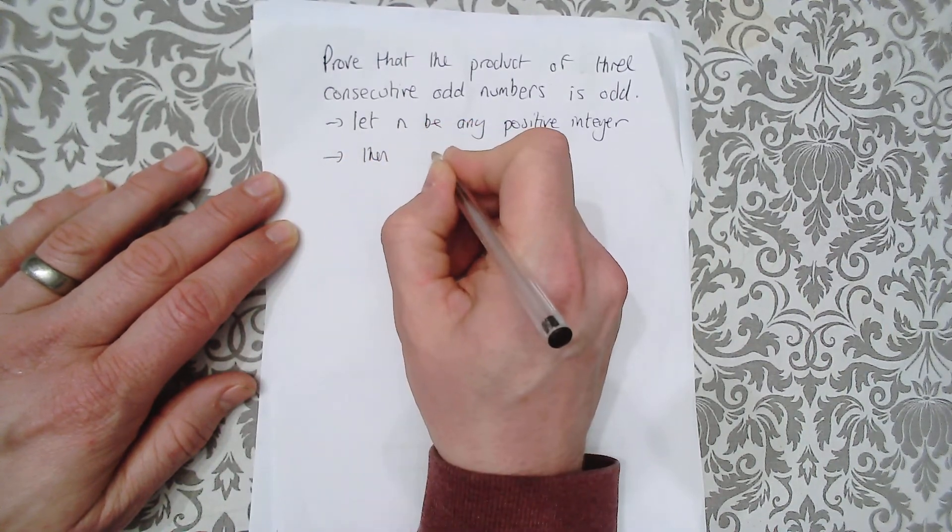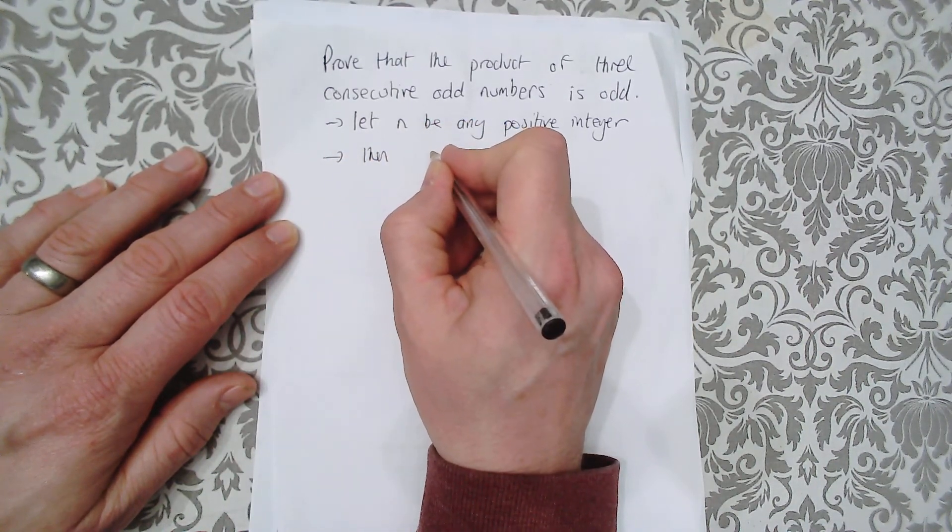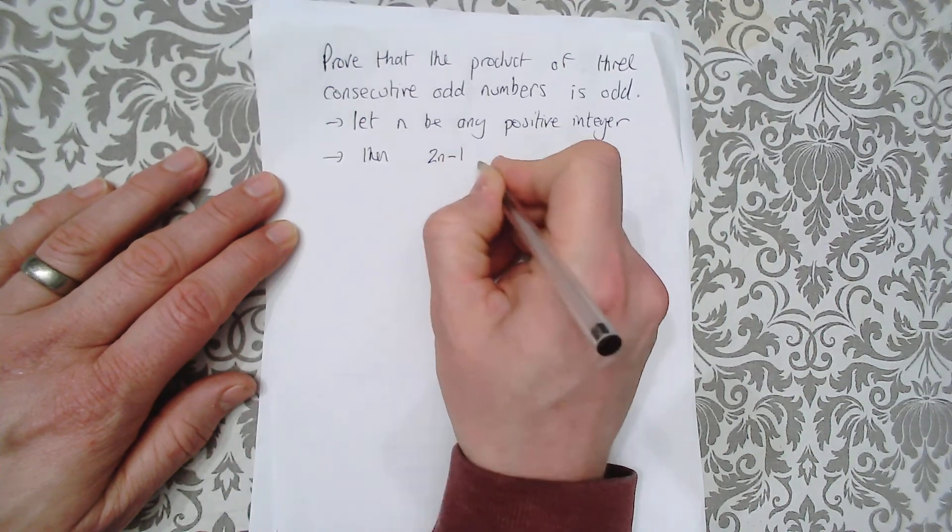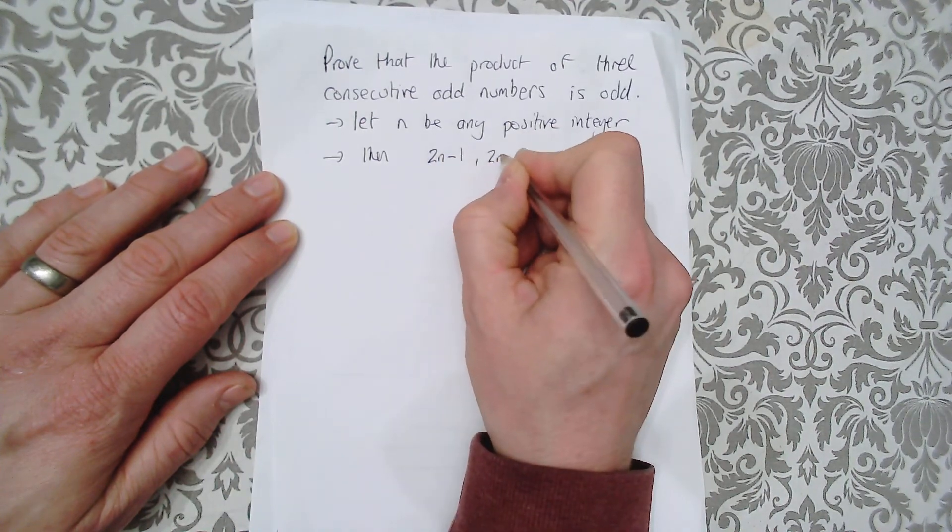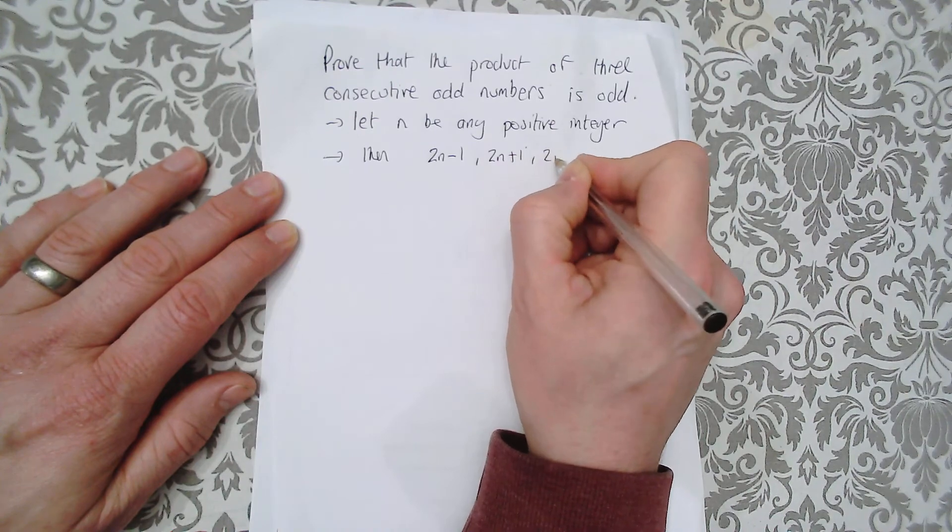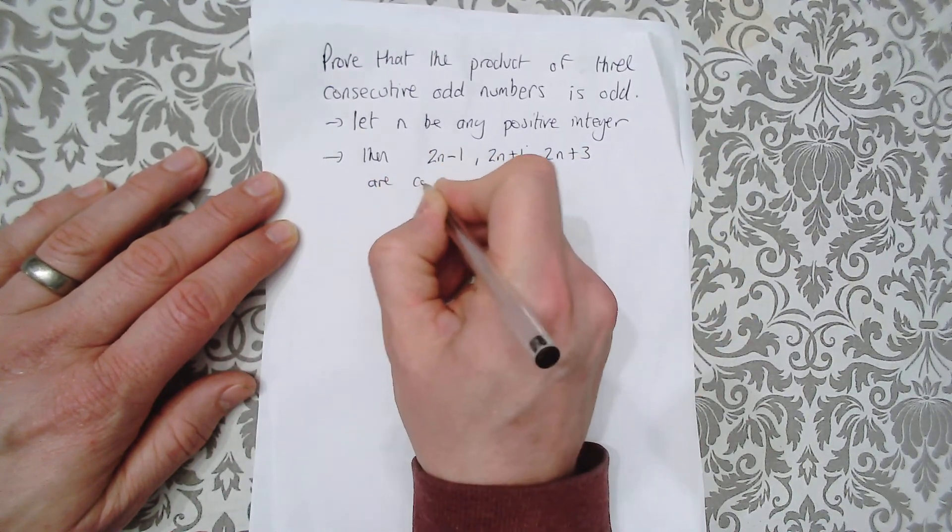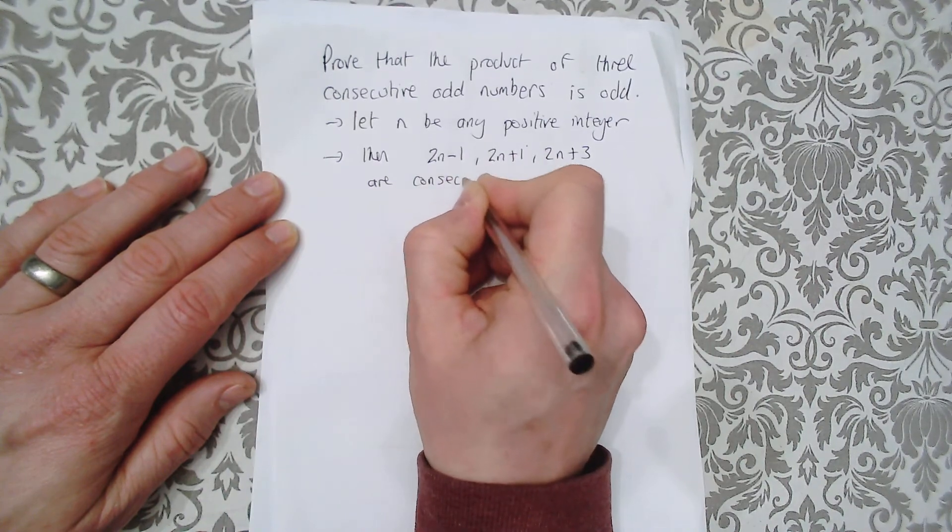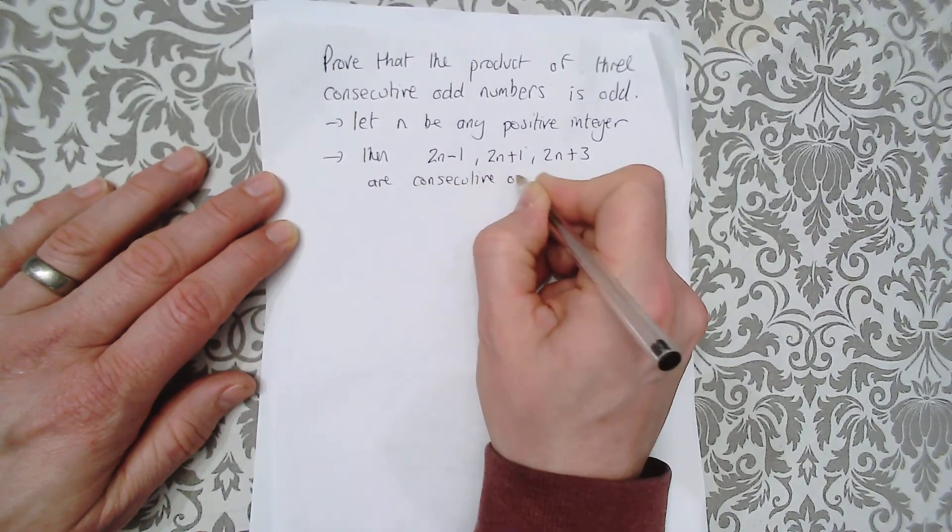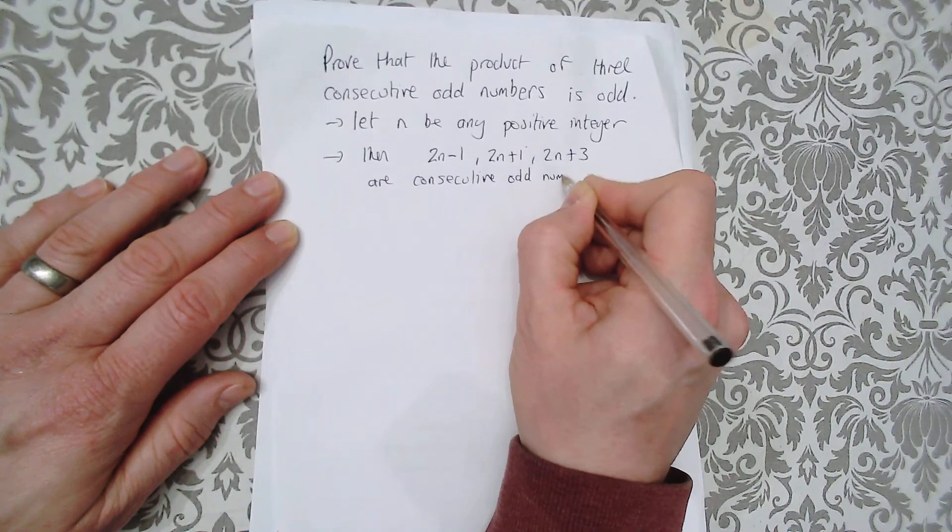Then we could say 2n minus 1, 2n plus 1, and 2n plus 3 are consecutive odd numbers.